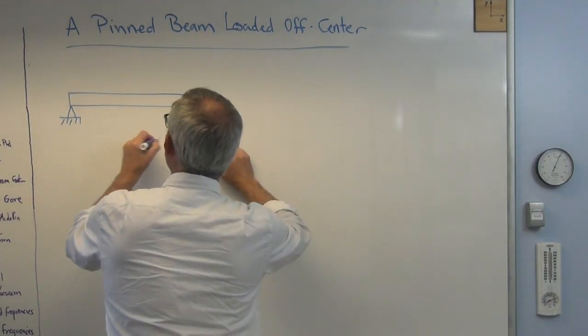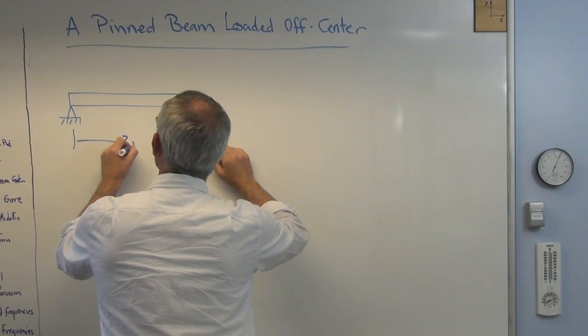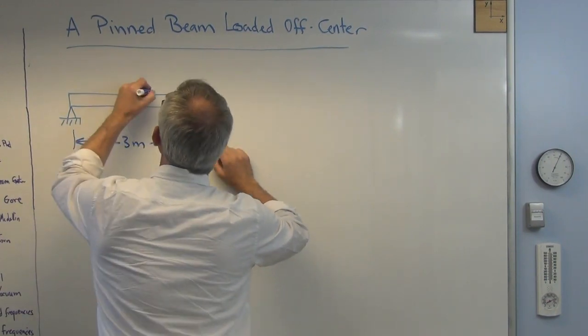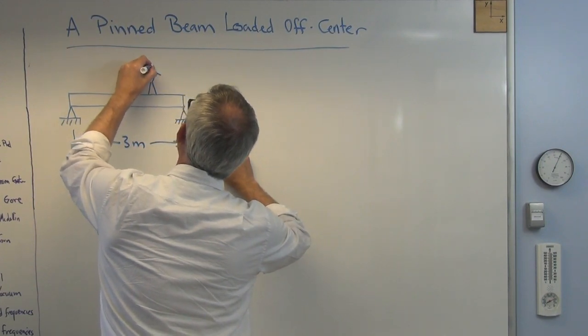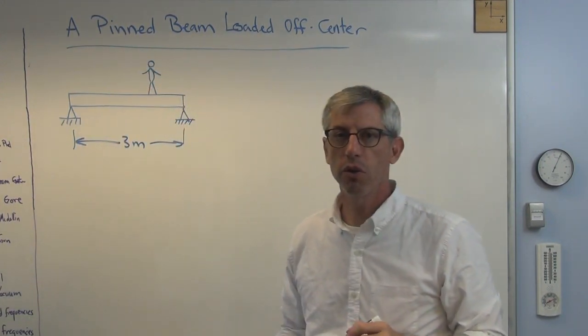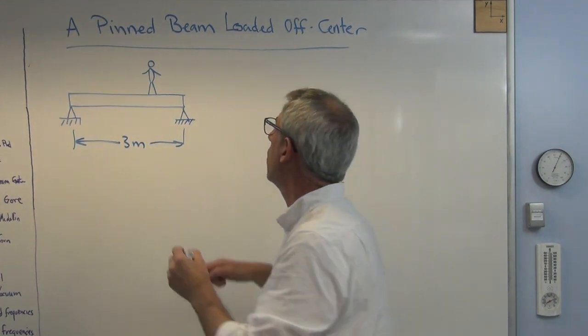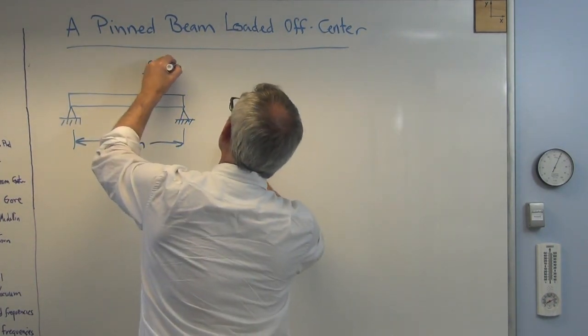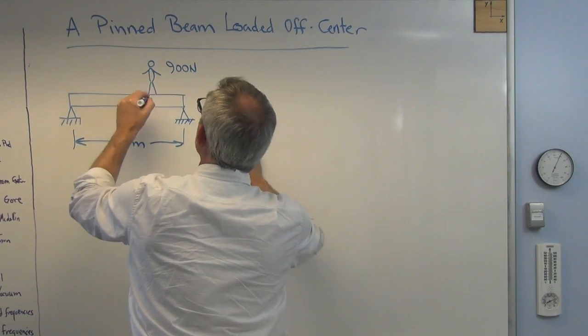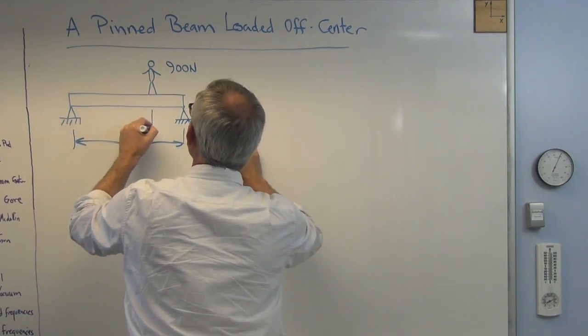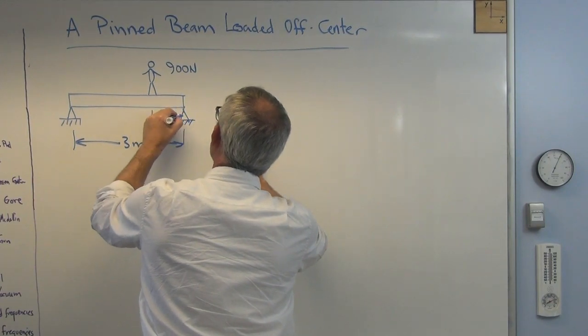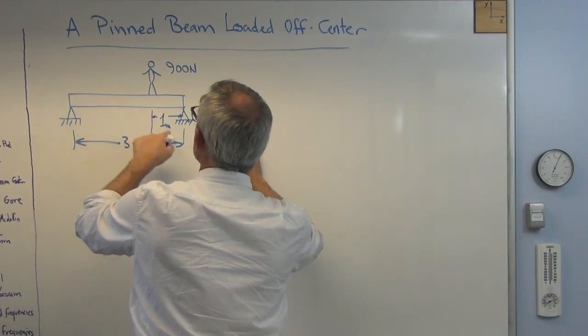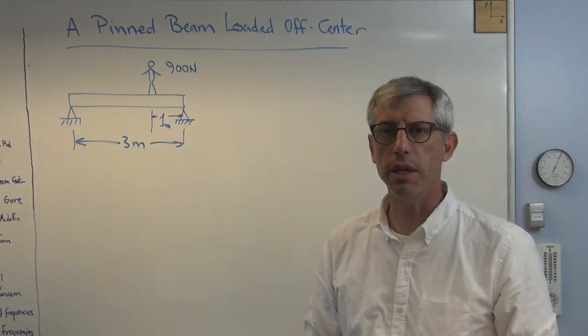So let's say we have a beam, and let's say it's three meters long. And let's say that there is a graying professor standing on it, and that graying professor weighs 900 newtons, and let's put the center of his load at one meter from the end of the beam. So it's two meters there, one meter there. I don't quite have it to scale, but you get the idea.